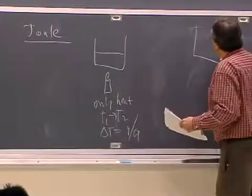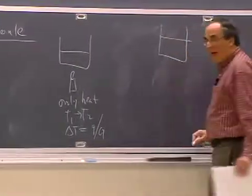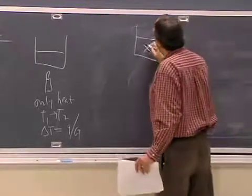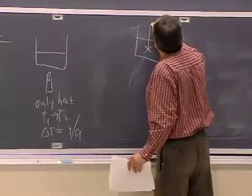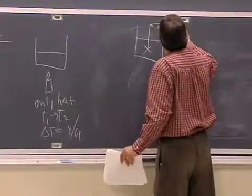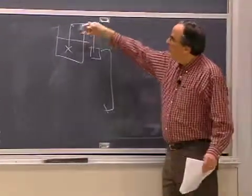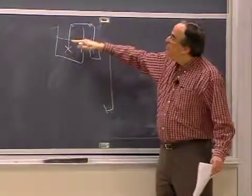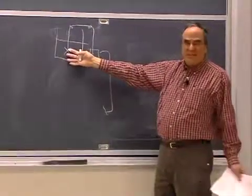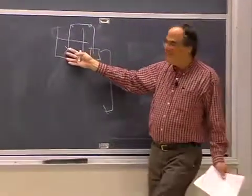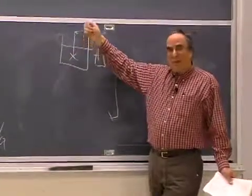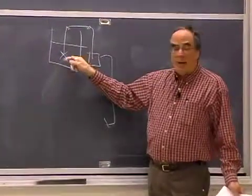Now, you could do a similar sort of thing, but instead of having a candle, you have a paddle wheel, and the paddle wheel is spun by a weight that's dropping from here to here. So this weight is being spun. Now, I'm really fantastic in drawing this mechanical device, but you can imagine that dropping a weight can cause a paddle wheel to turn.